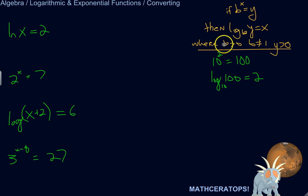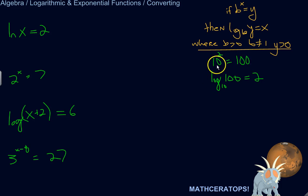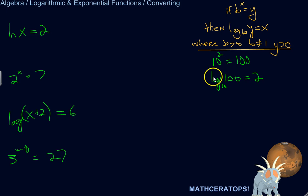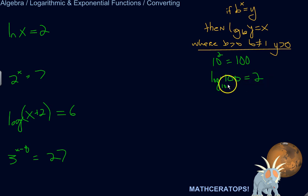Here's the rule that helps me keep it straight. If 10 squared equals 100, then log base 10 of 100 is equal to 2. In other words, log is asking the question: to what power do I need to raise this base, 10, in order to turn it into this, 100? The answer is 2. I raise 10 to the power of 2 and I get 100.